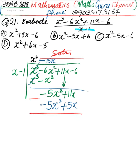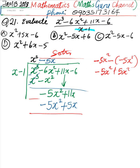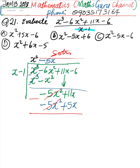So we do the subtraction again. Negative 5x squared minus negative 5x squared gives us negative 5x squared plus 5x squared, which equals 0. Then the remaining terms: 11x minus 5x equals 6x. So we have 6x.